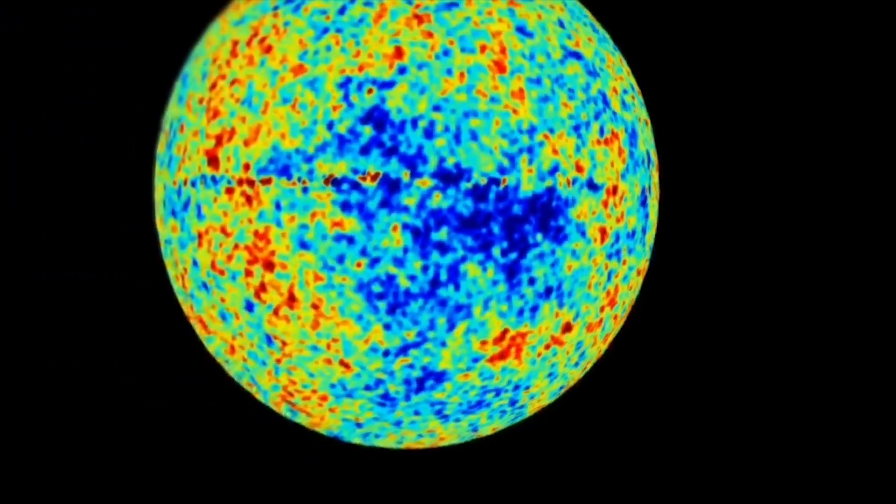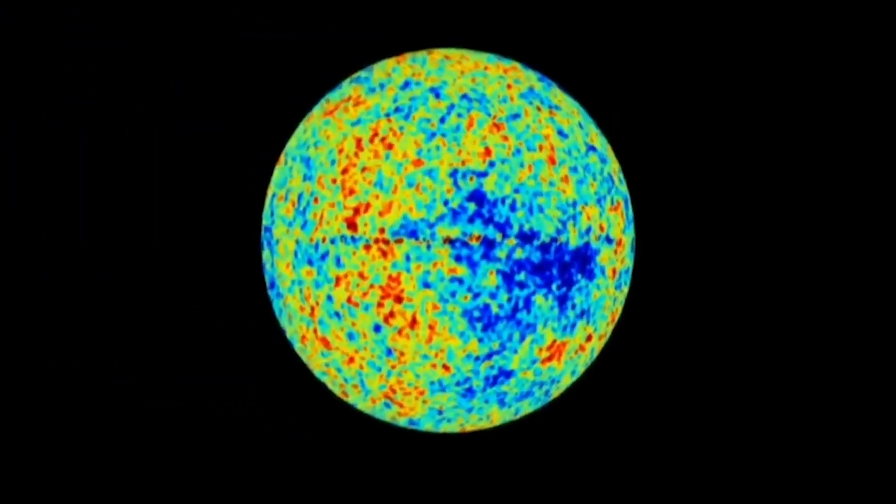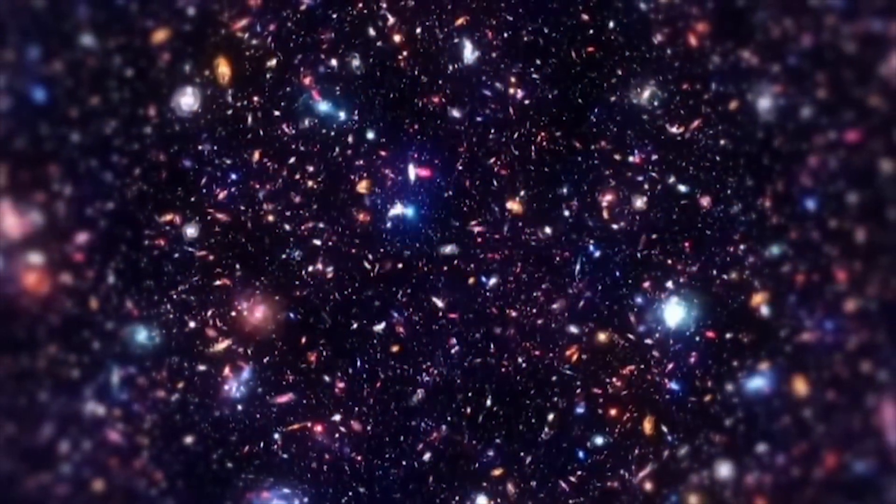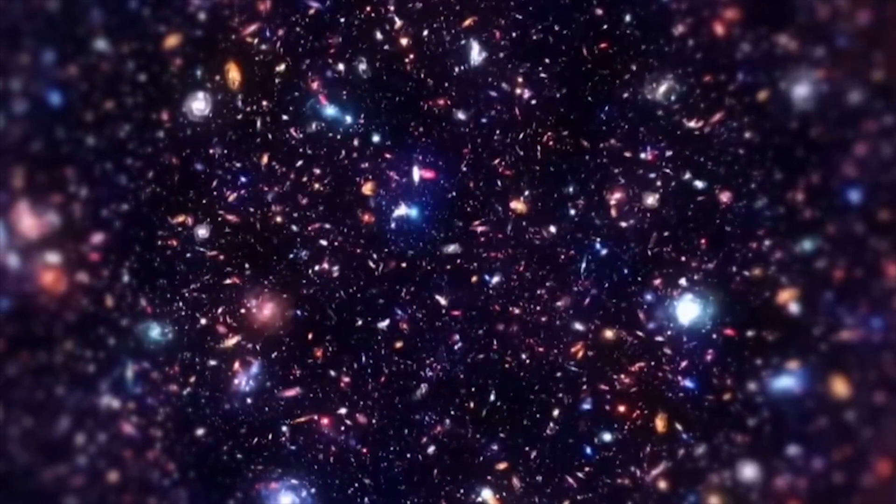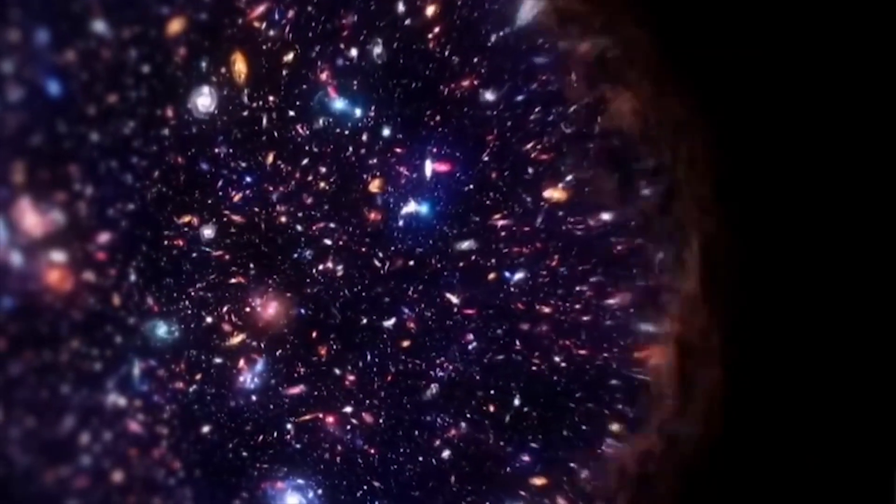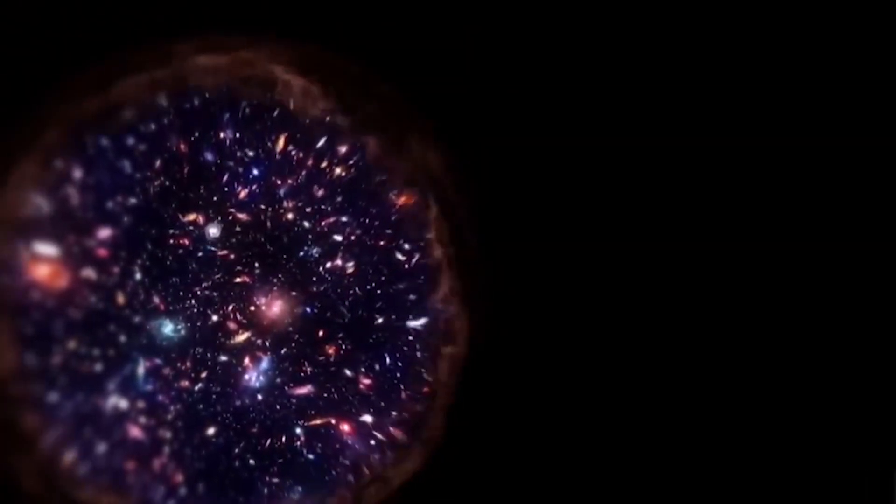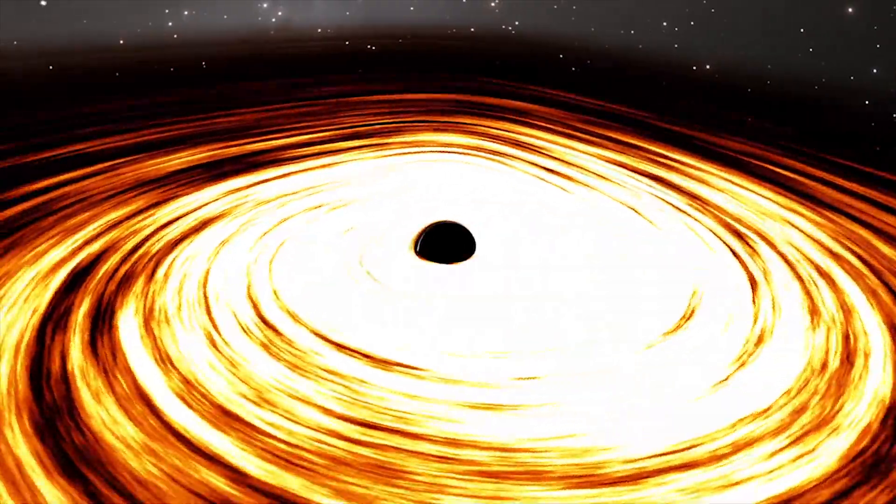The collapse intensified as the star's core became denser and denser. The immense weight led to an extraordinary compression, creating a singularity, a point of infinite density, at the heart of the collapsing star. This singularity became the seed from which TON 618, a supermassive black hole, would grow.